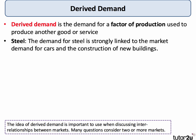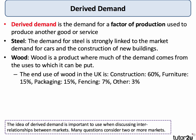For example, the demand for steel is strongly linked to the demand for new cars and the use of steel in construction of new buildings. Wood has a strong derived demand — 60% of wood in the UK is used in construction, 15% in furniture. We also use wood as pallets for packaging and for fencing, and other uses as well. There's a strong derived demand for wood.